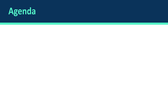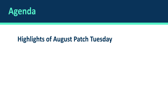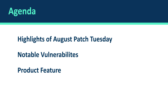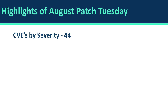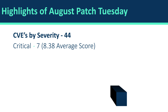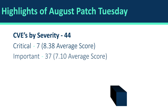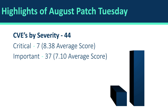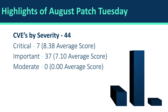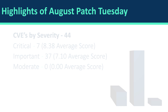So let's continue and see what we are going to do today. We will start with highlights of August Patch Tuesday, review three of the notable vulnerabilities released as part of Microsoft Patch Tuesday, and finish with two Jetpatch features. In this Patch Tuesday, we can see 44 unique CVEs — seven of them are critical with an average score of 8.38, and there are also 37 in important severity at a 7.1 average score. One vulnerability is in use for active attack, while two others are publicly known.